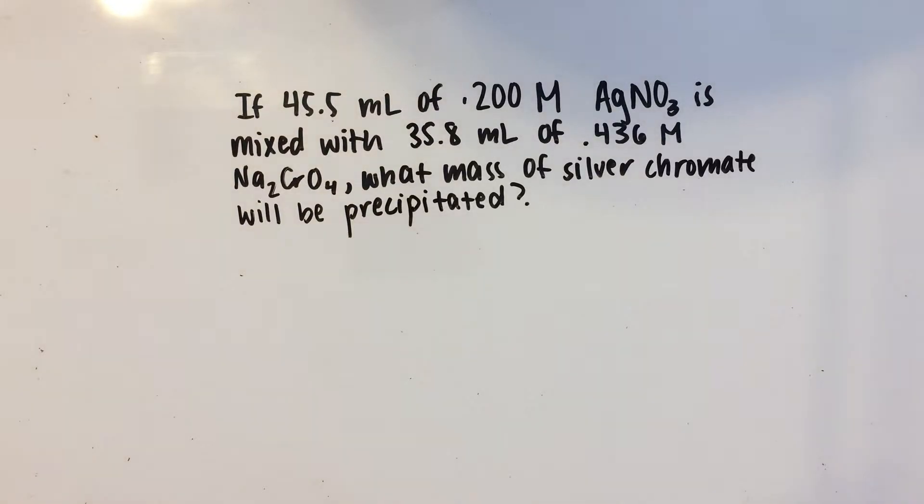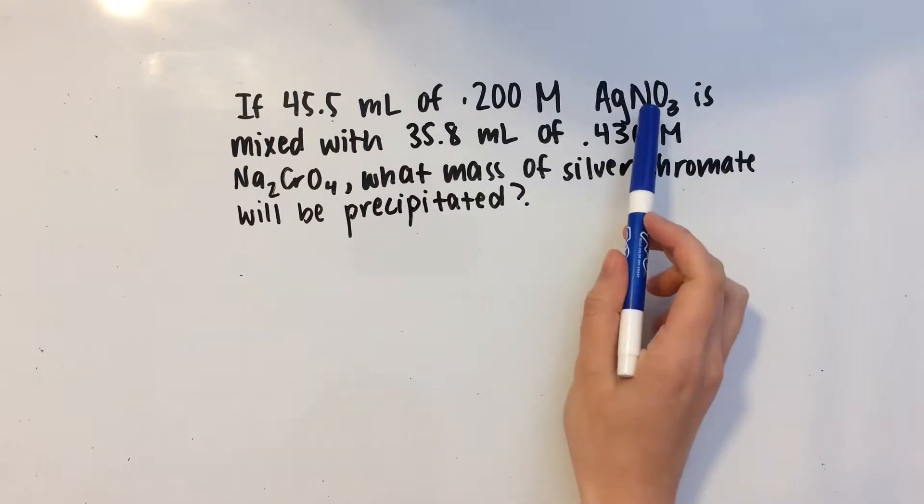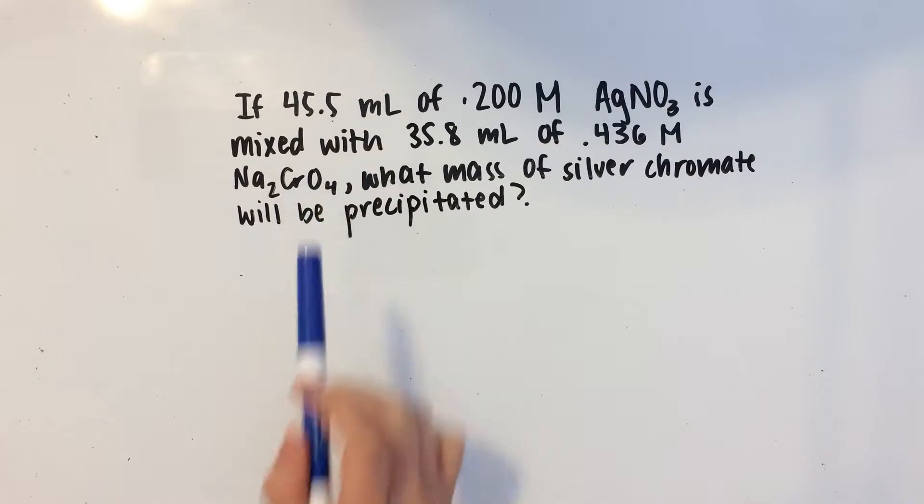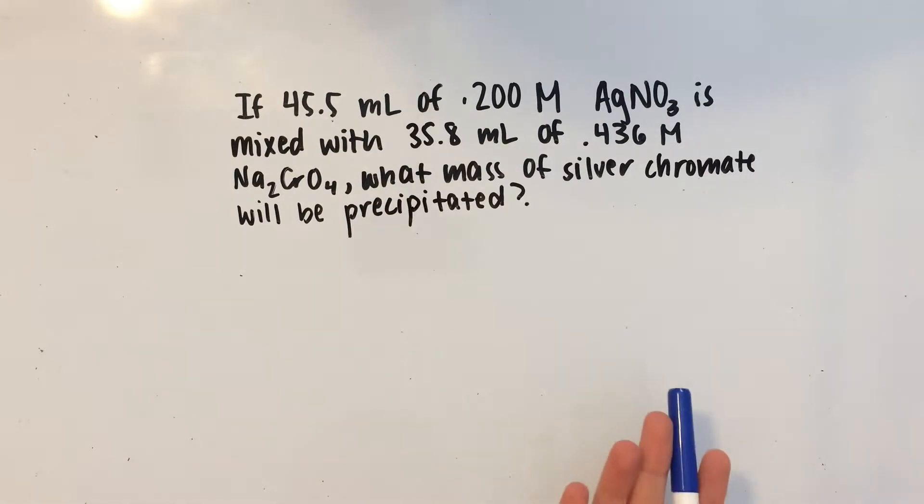This is a limiting reactant problem, meaning that we need to find if either this or this is the limiting reactant. Remember, the limiting reactant is the one that produces the least amount of product, which means that it runs out the quickest, and once there is no more of that reactant left, you can't make any more product.